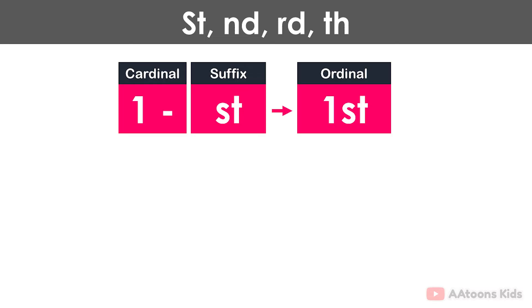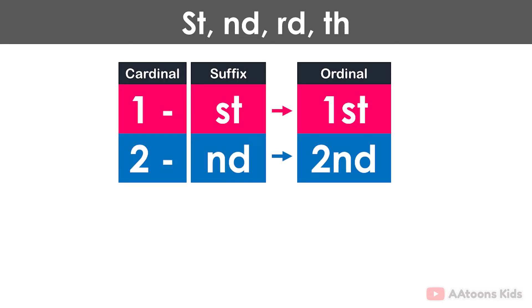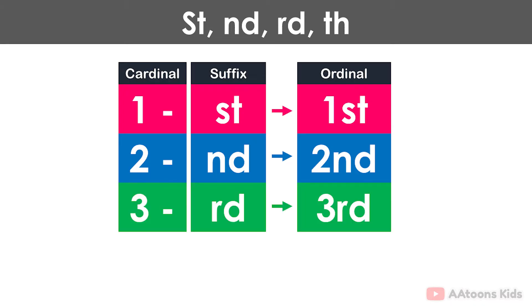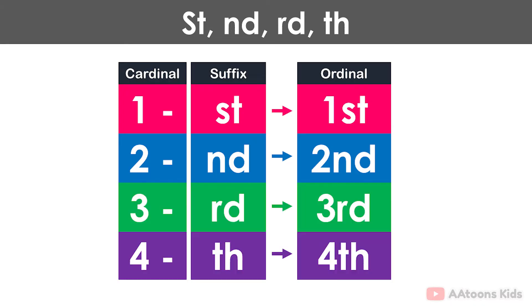How to use a suffix with a cardinal number to make an ordinal number: 1st — first, 2nd — second, 3rd — third, 4th — fourth.